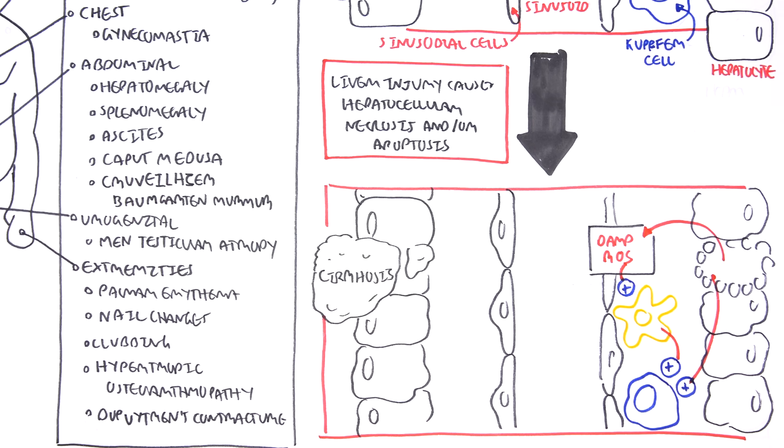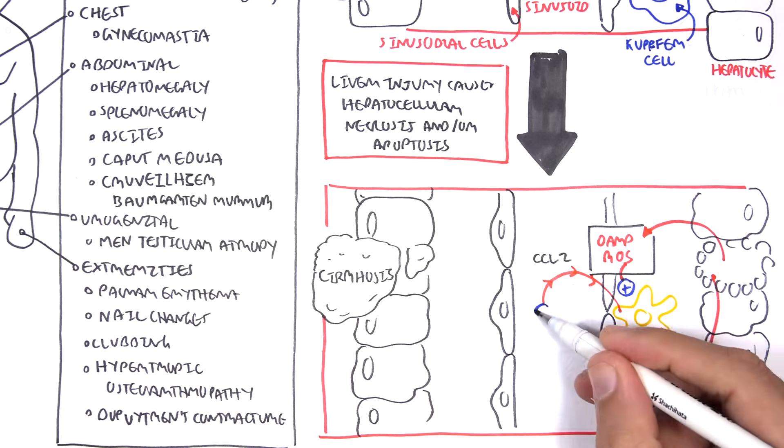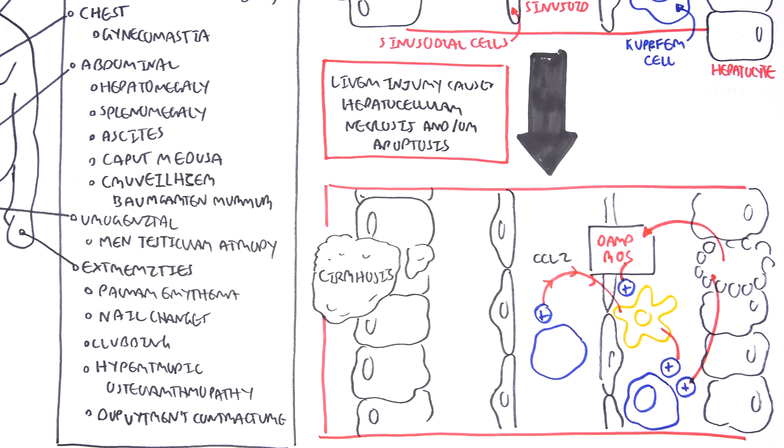The stellate cells, when they're activated, secrete chemokines such as CCL2, which attract more innate immune cells to the area via the CCL2 receptor.